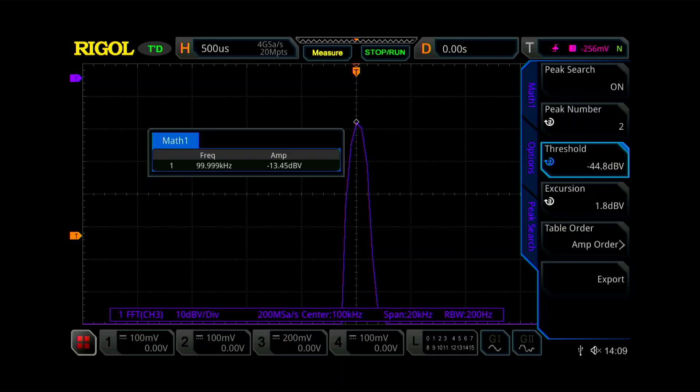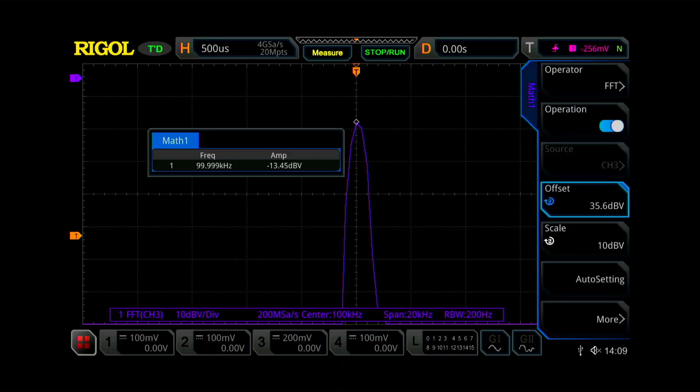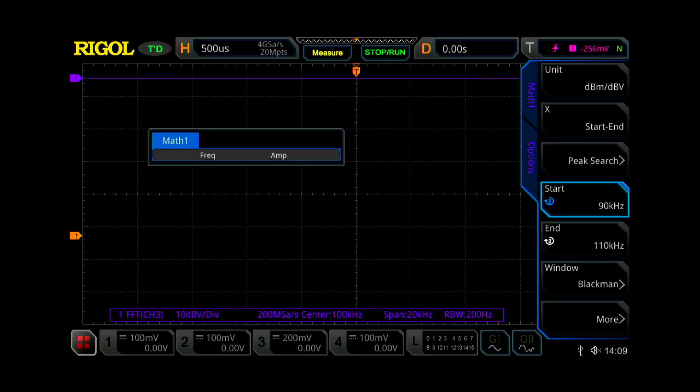FFT is measuring minus 13.45 dB volts. So that's what the FFT thinks it is. Guess what? We get to do some more math because there's no way to do DBMs on this oscilloscope FFT. Even though if you go to math and you go to FFT units, it says DBM slash DB volts. So that's a DB milliwatts and DB volts. And you think, oh, great. You can change between the two of them somewhere in there.